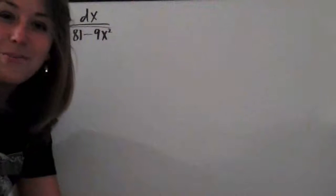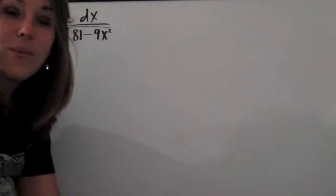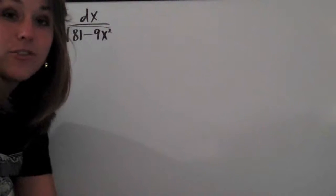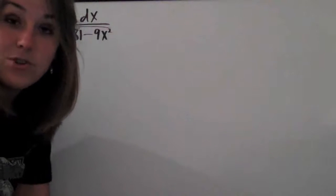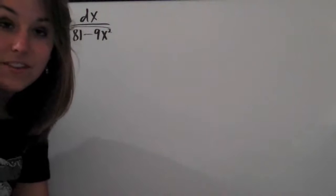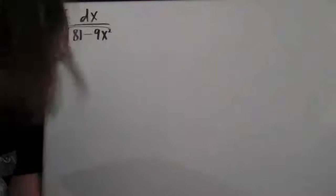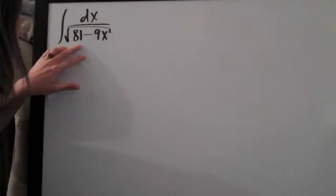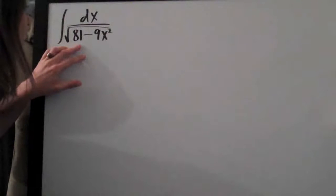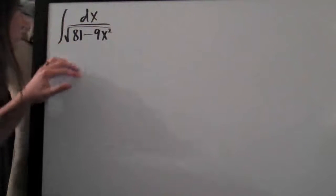Hi everyone, welcome back to IntegralCalc.com. We're going to be doing another trigonometric substitution problem today. This one was sent to us through the website, and the problem is dx over the square root of 81 minus 9x squared.